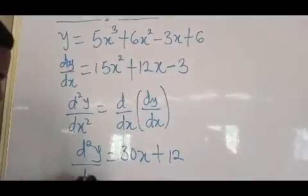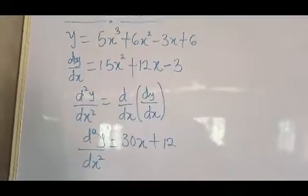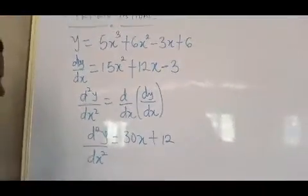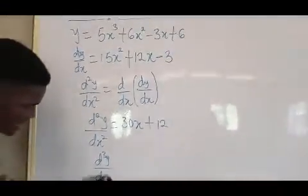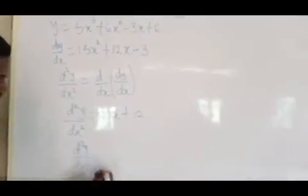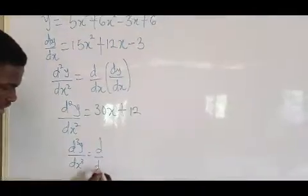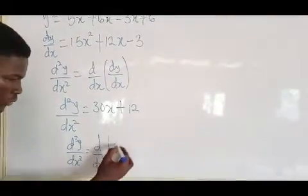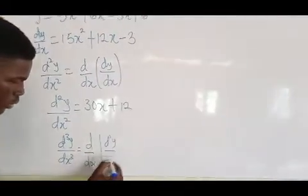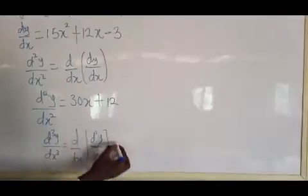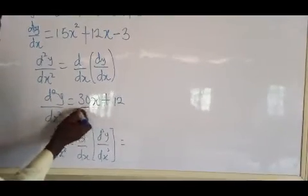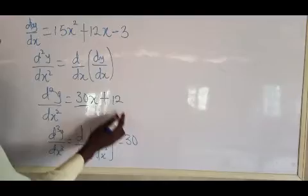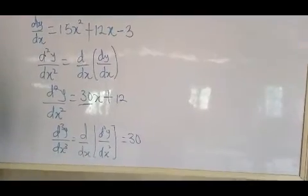If you are told to find d³y/dx³, it is the same thing — it is the same as d/dx of (d²y/dx²). That means you differentiate the second derivative again. When you differentiate that again, you get 30, because if you differentiate a constant it gives you zero.